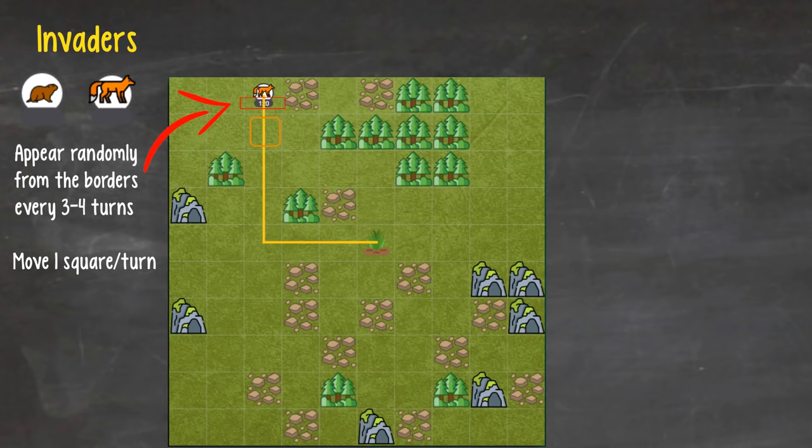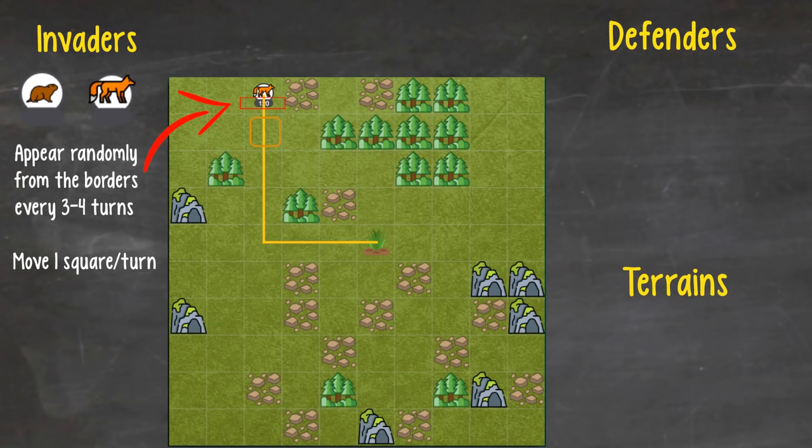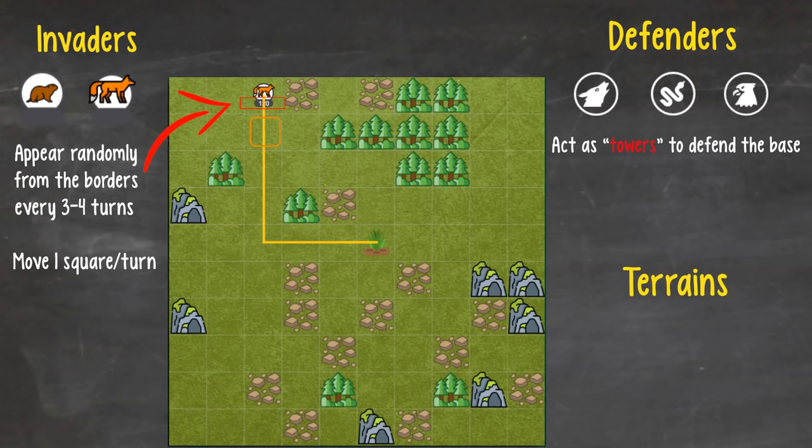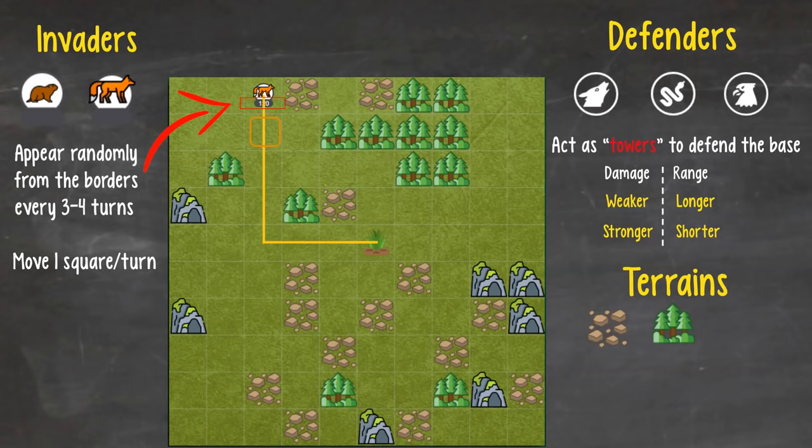The invaders in this game are real-life invasive species such as fox, mice, or groundhogs. They appear randomly from the borders of the map every 3-4 turns, and move 1 square per turn toward your base. They come in stacks, occupying 1 square each with a population that acts too similar to health points in other games. To delay and destroy these invaders, you'd use resources called defenders and terrain transformations, or just terrains as I usually call them. Defenders are predators such as wolves, snakes, or falcons, which in this game would act as towers to defend the base by taking away the population from invaders that get into their range. Each defender has its own range and damage, but generally the weaker defenders have longer ranges and the stronger defenders have shorter ranges. Terrains such as rocks, forests, and cliffs, on the other hand, do not kill invaders but act as obstacles to invaders.